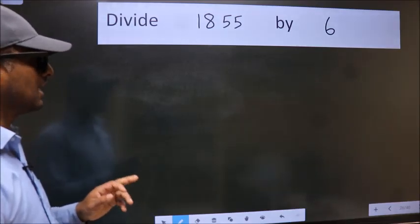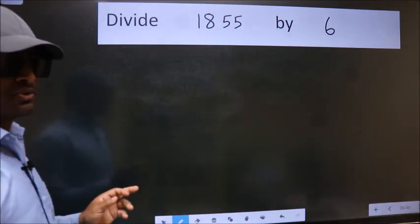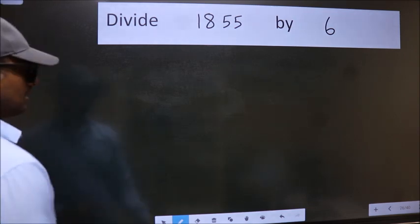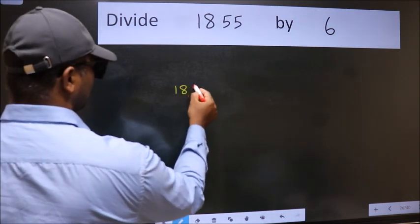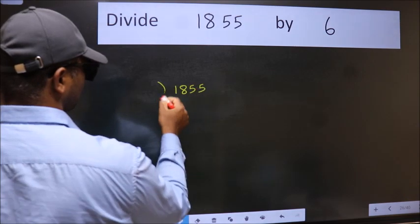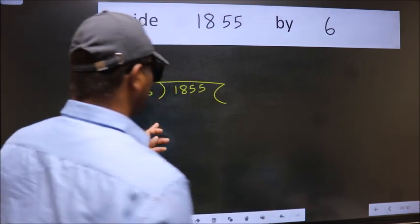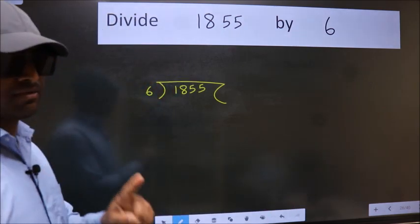Divide 1855 by 6. To do this division, we should frame it in this way. 1855 here, 6 here. This is your step 1.